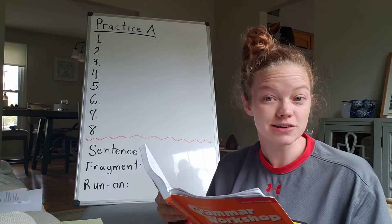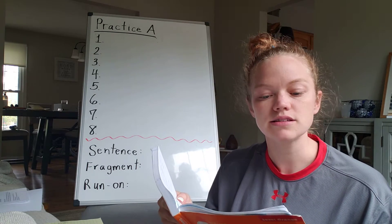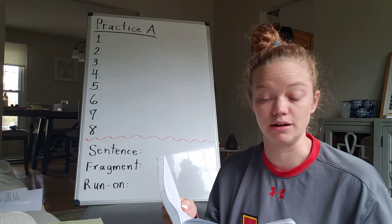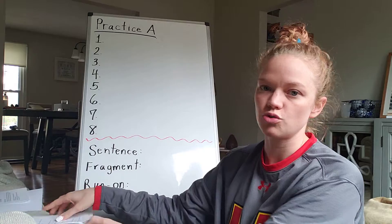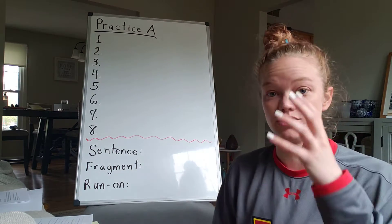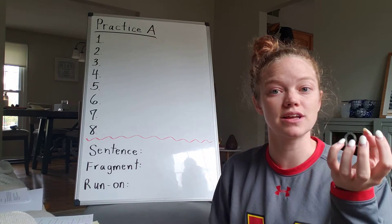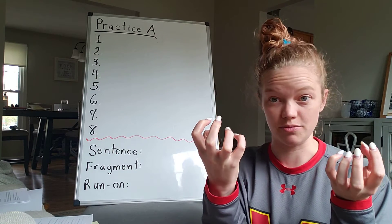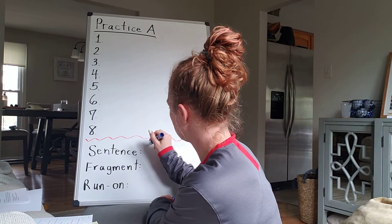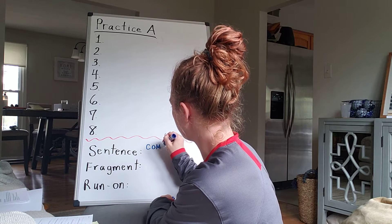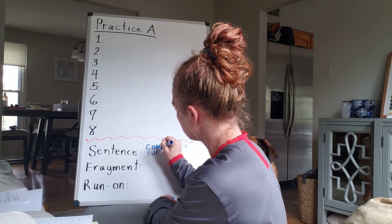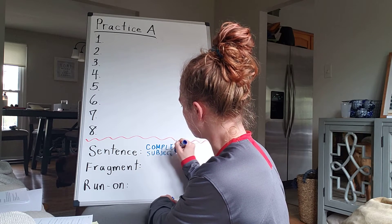A fragment is an incomplete sentence. The subject or predicate might be missing. To correct this kind of fragment, add a subject or predicate. So we know that a sentence has a subject and a predicate to be complete. It has who or what the sentence is about, and then it has the action word, the verb, that is being done. So a sentence is complete — that's subject and predicate.